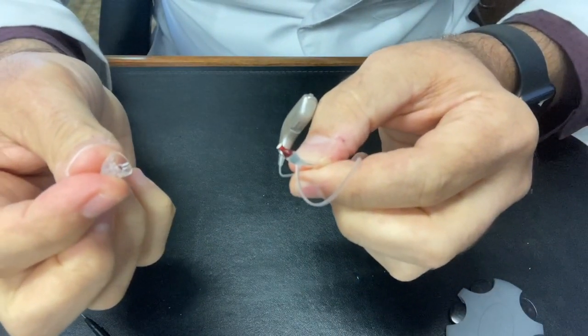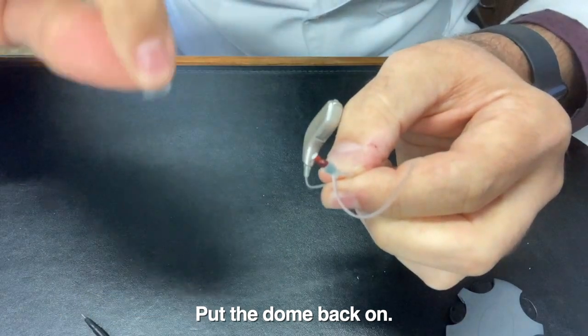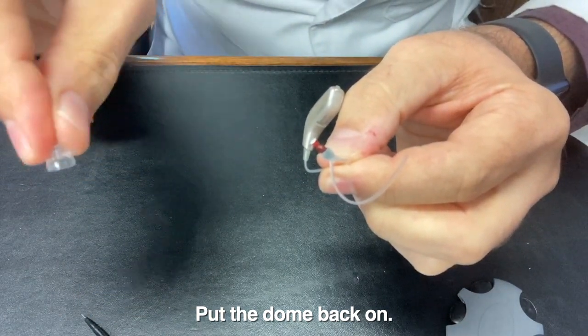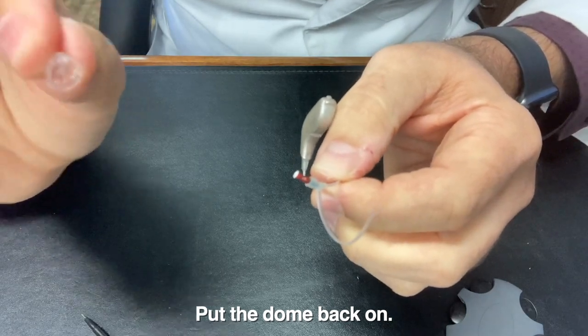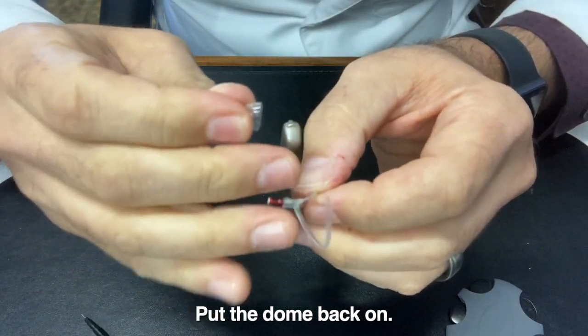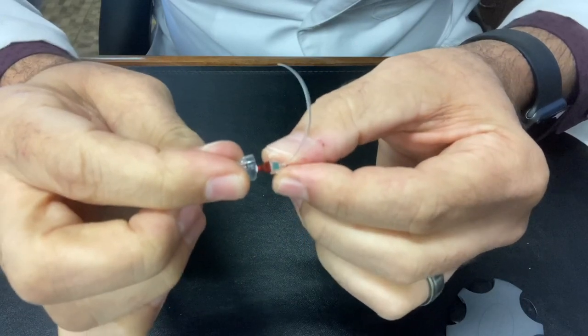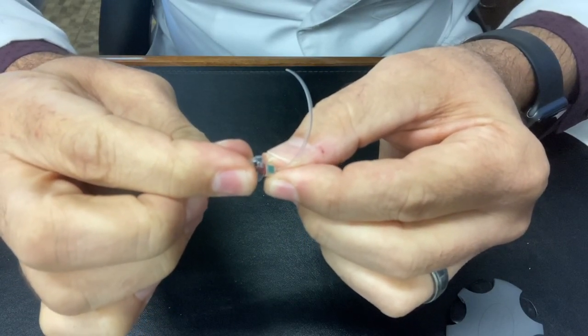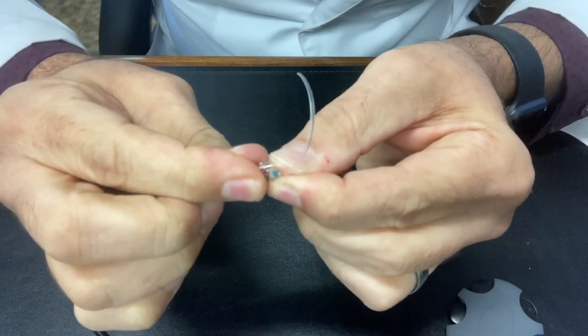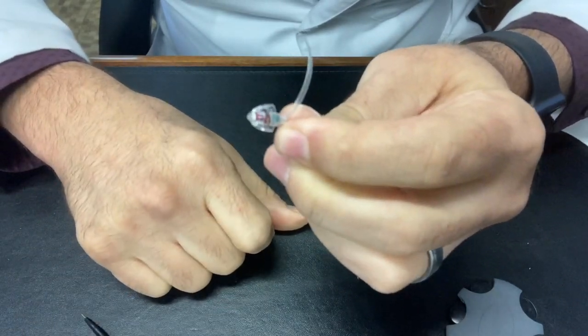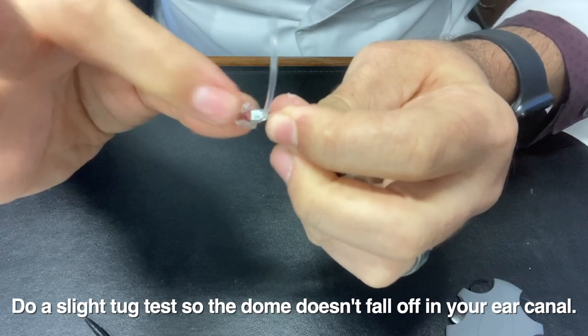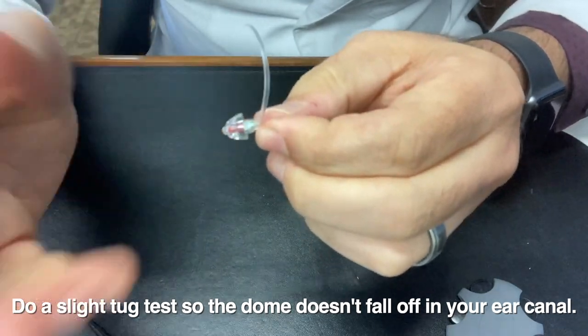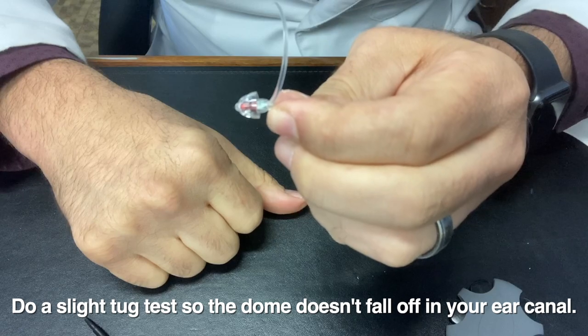Now you have to put the dome back on. I like to grab it just like this and then look underneath. There's a little grommet right in the middle of that bell there. You have to line it up just about perfectly and then wedge it onto there. If you've done it correctly, you should be able to do a slight tug test to make sure it's not going to fall off in your ear canal.